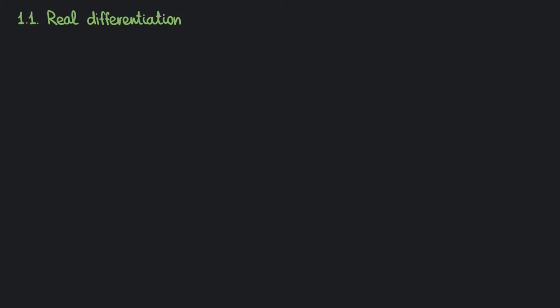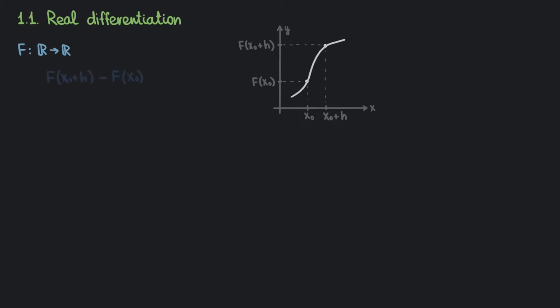Before we talk about differentiability of complex functions, let me briefly remind you what this notion means for real functions. Suppose f is a function from ℝ to ℝ. To get the derivative of f at a point x equals x₀, first we give x₀ a small increment h. Then we write down the difference between the values of f at x₀ plus h and x₀, divided by h. And finally, let h tend to 0. If this limit exists and is unique, we call it the derivative of f at x₀ and say that f is differentiable at this point.